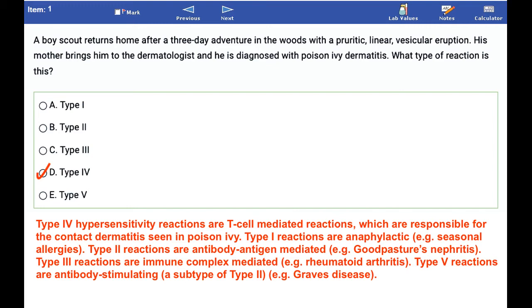Type I reactions are anaphylactic, for example, seasonal allergies. Type II reactions are antibody-antigen mediated, for example, Goodpasture's nephritis. Type III reactions are immune-complex mediated; an example is rheumatoid arthritis. Type V reactions are antibody-stimulating, a subtype of type II. Graves' disease is an example of type V.